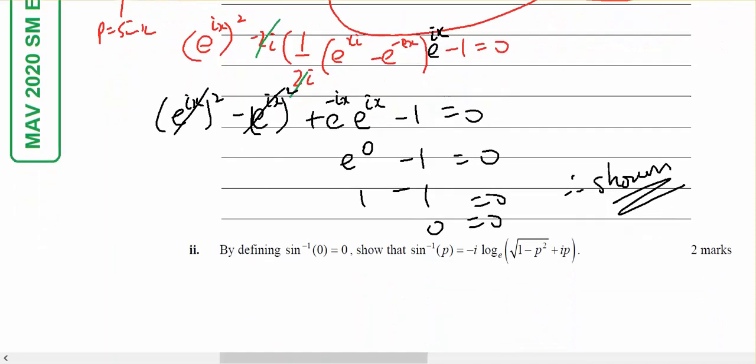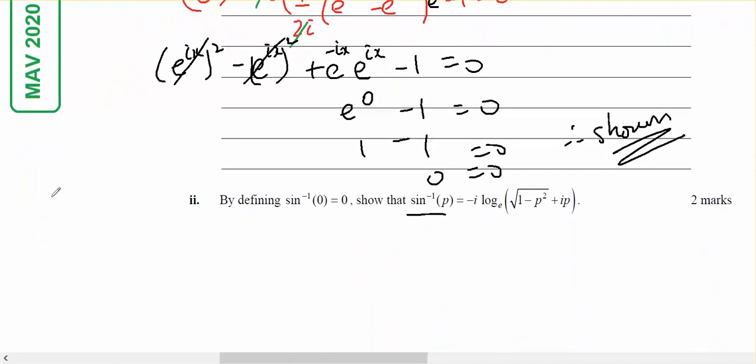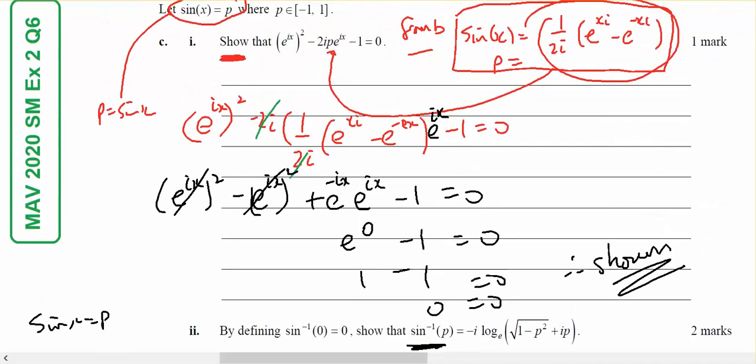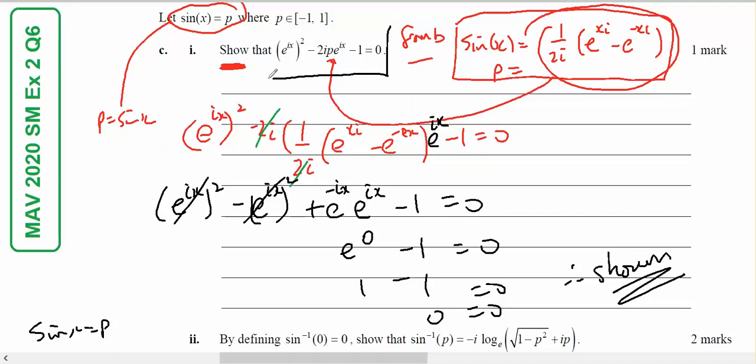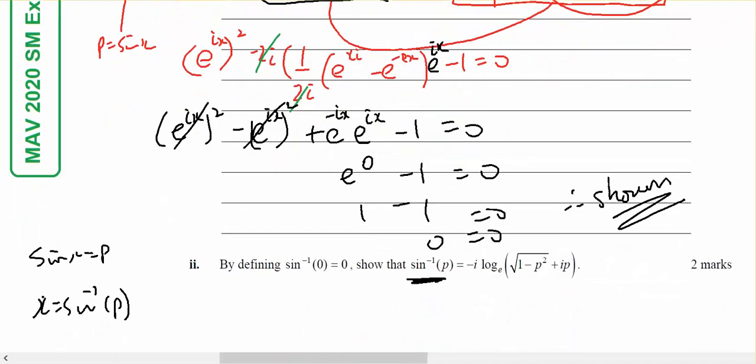For the next part, I know from the previous question that sine of x equals p, therefore x will equal the inverse sine of p, and that's what I've got to show. In the previous question I was given this equation, so that's what I'm going to work with. They must have given me the equation for some reason.